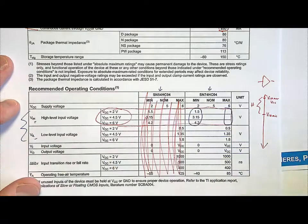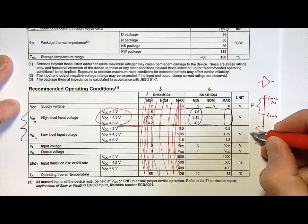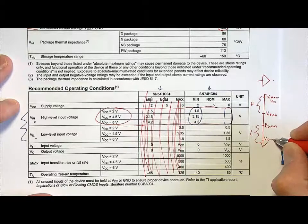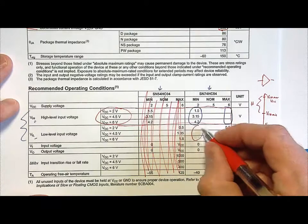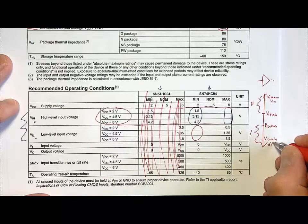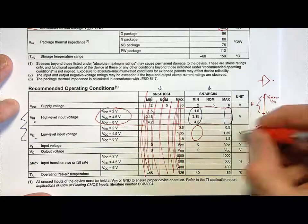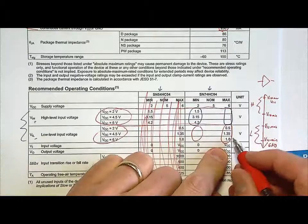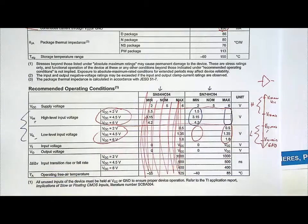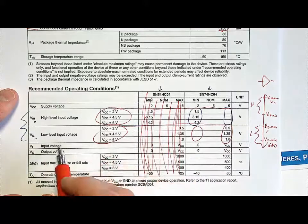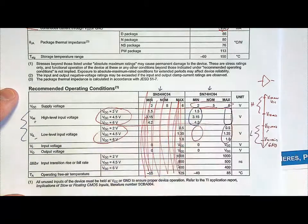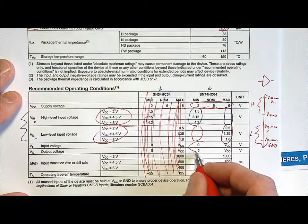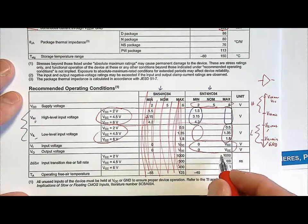The same applies to VIL — the specifications on the input for when it's interpreted as a low. You'll have VIL max and VIL minimum, but they don't give the minimum because that's the best case, assumed to be ground. They again give specifications across a range of power supply voltages, and you have to interpolate to find the value for your supply. The power supply voltage range recommended is 2 to 6 volts, and VI and VO swing between ground and VCC.